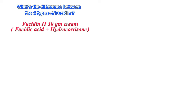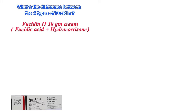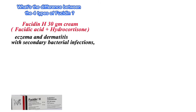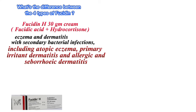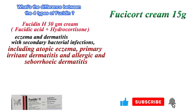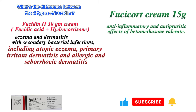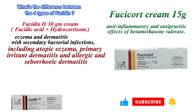Number three: Fucidin H 30 gram cream — fusidic acid plus hydrocortisone — is indicated in eczema and dermatitis with secondary bacterial infections, including atopic eczema, primary irritant dermatitis, and allergic and seborrheic dermatitis.